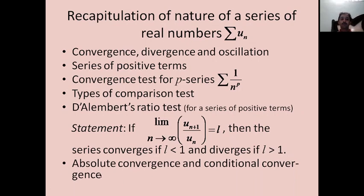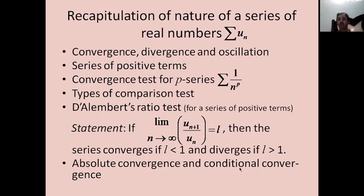We also have absolute convergence and conditional convergence of a series of real numbers sigma u_n. A series sigma u_n is said to be absolutely convergent if sigma |u_n| is convergent. If sigma u_n is convergent but sigma |u_n| is not convergent, then the series is said to be conditionally convergent. Every absolutely convergent series is convergent, but not vice versa.